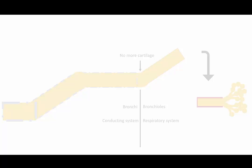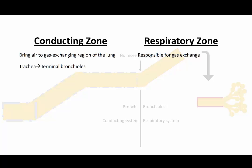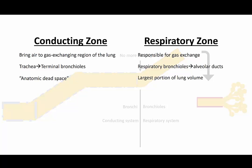It is important to understand the difference between these two functional zones of the respiratory system. The structures which make up the conducting zone are responsible for bringing air to gas-exchanging regions of the lung, while those in the respiratory zone are responsible for diffusion of oxygen and carbon dioxide. The conducting zone includes the structures from the trachea distal to the terminal bronchioles, and is also responsible for the anatomic dead space — airways which are ventilated but not perfused. The respiratory zone contributes very little to the anatomic dead space and encompasses the largest portion of the total lung volume. It is also important to note that the conducting zone is the primary source of airway resistance for the respiratory system as a whole.